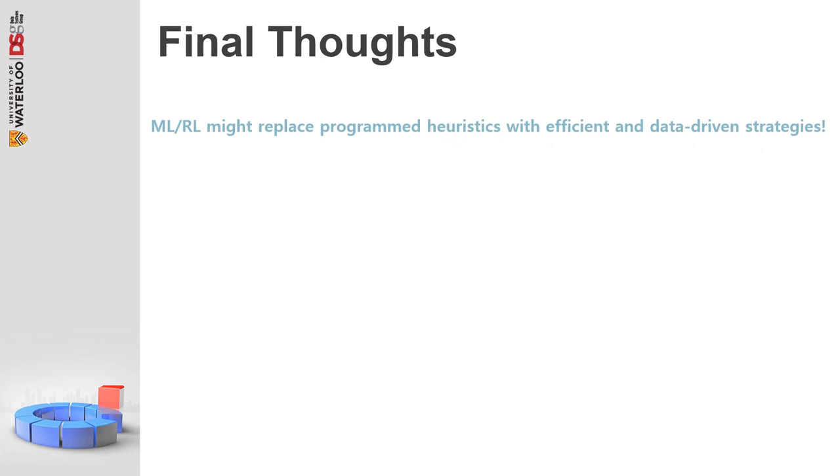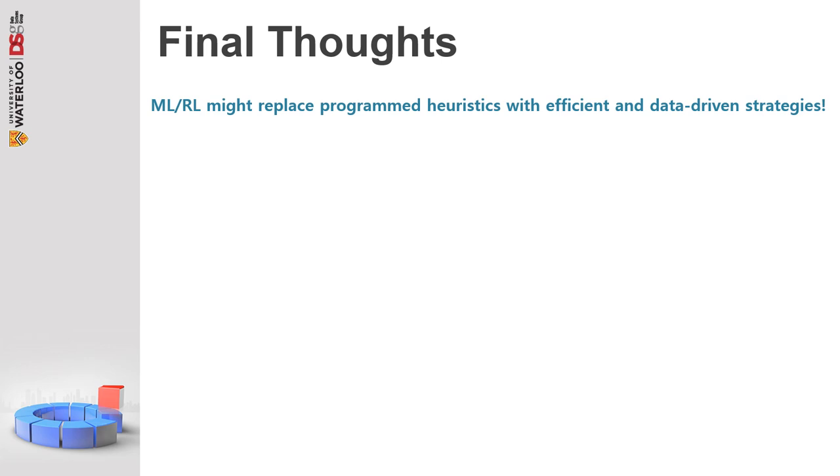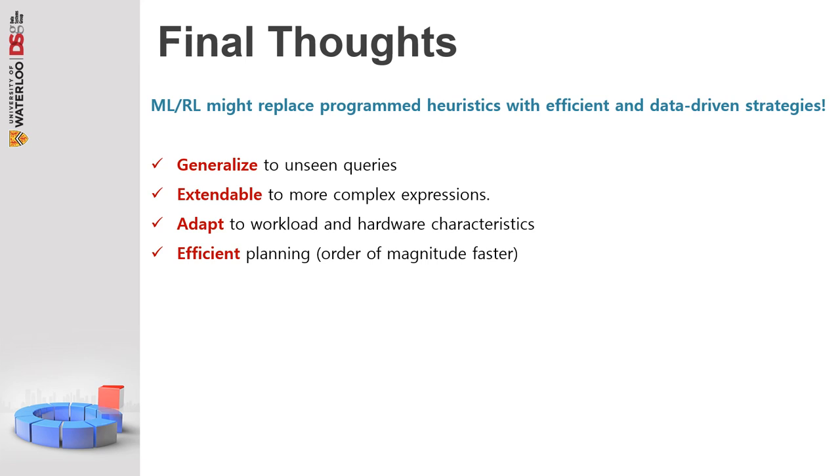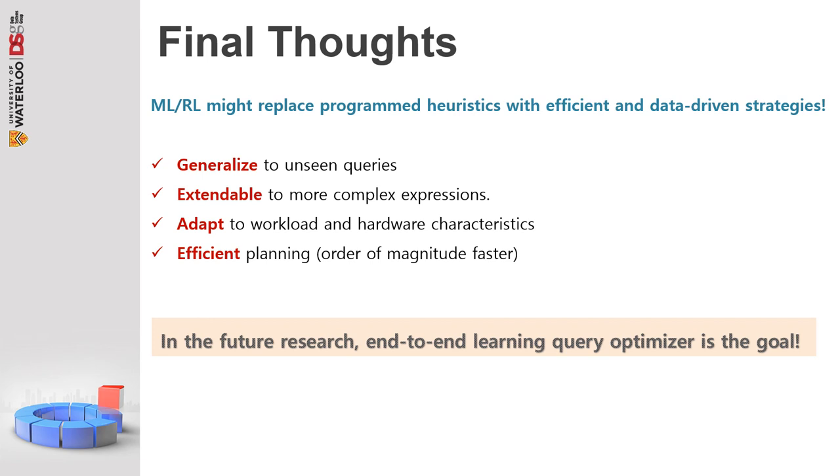Now let's go to the conclusion. Machine learning, or basically reinforcement learning, might replace programmed heuristics with efficient and data-driven strategies. And that is what they tried to prove through this research. They also showed that it can generalize to unseen queries, extendable to more complex expressions, and adapt to workload and hardware characteristics, efficient planning, order of magnitude, very faster. And they're planning that in the future research, end-to-end learning query optimizer, if possible, they want to build one. So here are the references and credits I've taken help from. Thank you everyone for listening to my presentation.